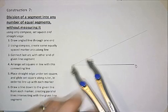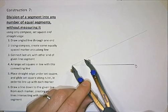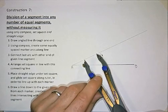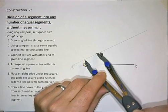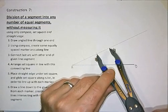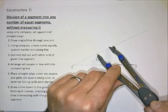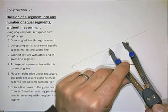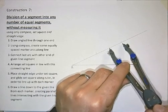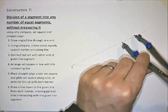So, starting at A, I'm going to draw 5 arcs. Obviously, if it was 6 equal parts, I'd be doing 6 equally spaced arcs. 4 and the 5th one, 5.